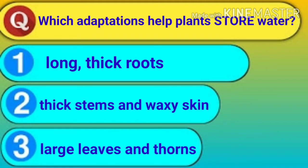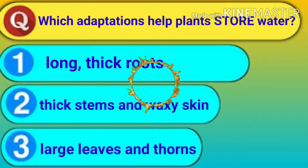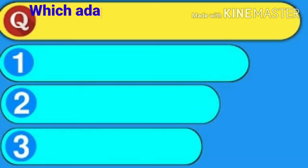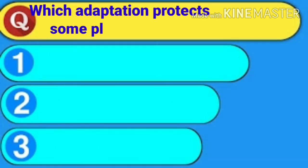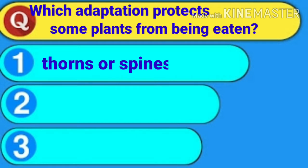Which adaptations help a plant store water? First: long thick roots. Second: thick stems and waxy skin. Third: large leaves and thorns. Take five seconds and try yourself. The answer is thick stems and waxy skin.